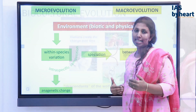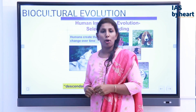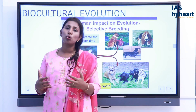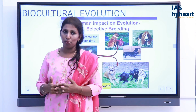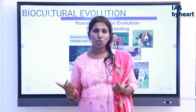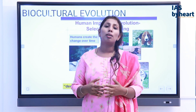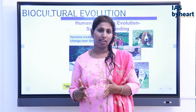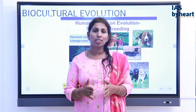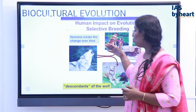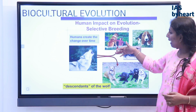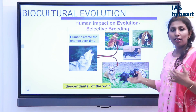Biocultural evolution is a unique topic of biological anthropology. It discusses how culture and biological aspects go hand in hand in the evolution of species, especially human beings. Humans are a complex species because of biocultural evolution — not just biological changes, but also cultural and social changes led to human evolution. Man's upright posture and several other characteristics are mainly due to social changes. These cultural changes also influenced the evolution of other species — the wolf, through selective breeding, became different breeds of dogs during domestication.